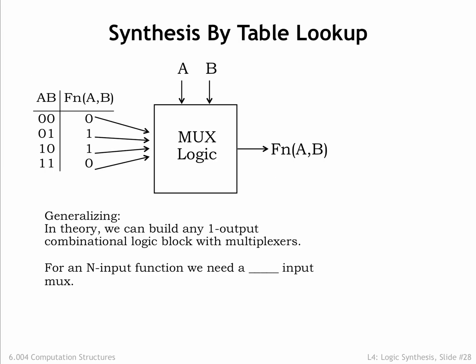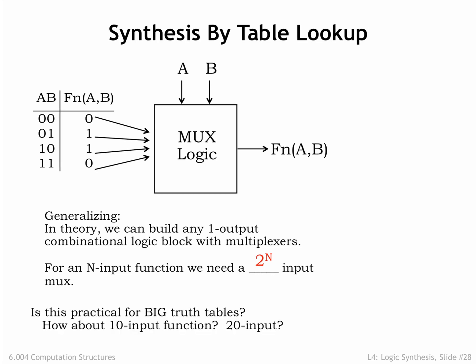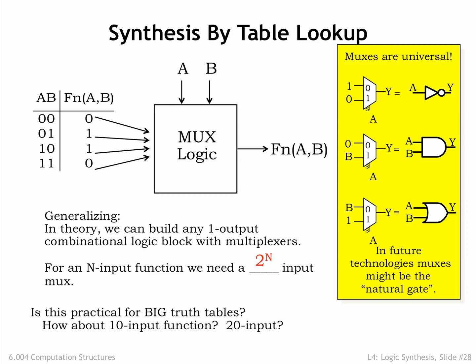MUXs with n-select lines are effectively stand-ins for n-input logic circuits. Such a MUX would have 2n data inputs. They're useful for n up to 5 or 6, but for functions with more inputs the exponential growth in circuit size makes them impractical. Not surprisingly, MUXs are universal, as shown by these MUX-based implementations for the sum-of-products building blocks. There is some speculation that in molecular-scale logic technologies MUXs may be the natural gate, so it's good to know that they can be used to implement any logic function. Even XOR is simple to implement using only 2-to-1 MUXs.